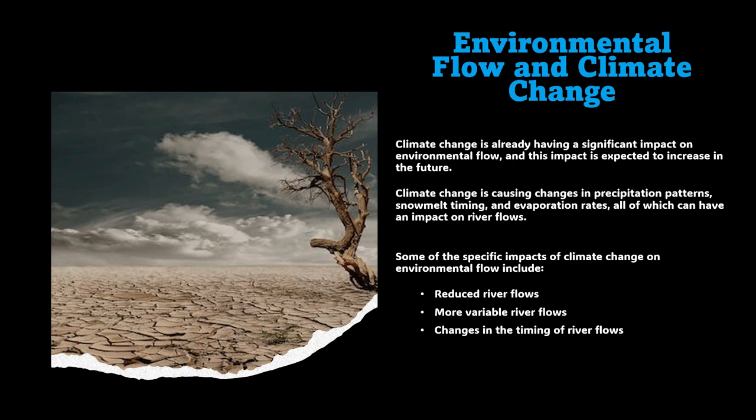Climate change is also causing river flows to become more variable, meaning there will be more extreme high and low flows, which can make it difficult to maintain healthy river ecosystems. Additionally, climate change is causing changes in the timing of river flows, meaning that rivers may flood at different times of the year, which can disrupt fish migration and other important ecological processes.